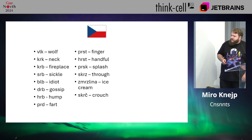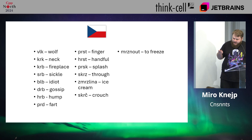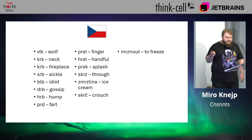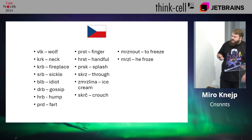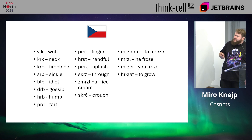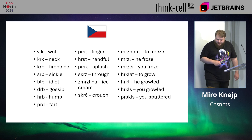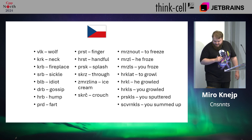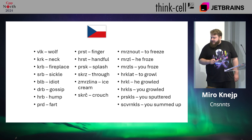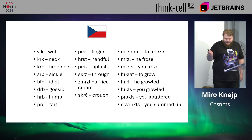And we can do the same with vowels: skrch, or mrznot — the base form of 'freeze'. And then you start declension: mrzl, mrzls, hrklat — 'to growl' — hrkl, hrkls, and we just keep going: prskls, and stvnkls. And those are real words.